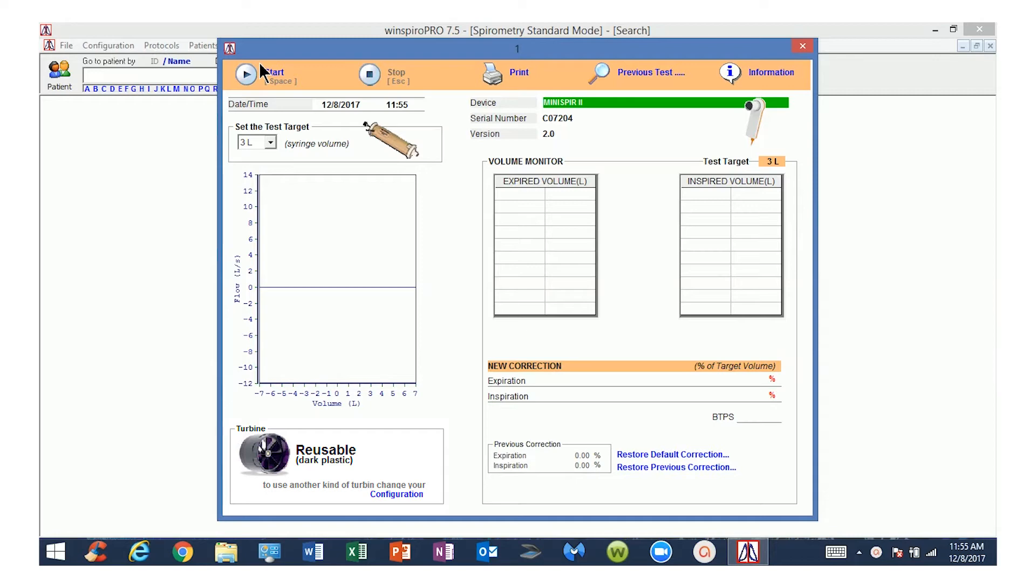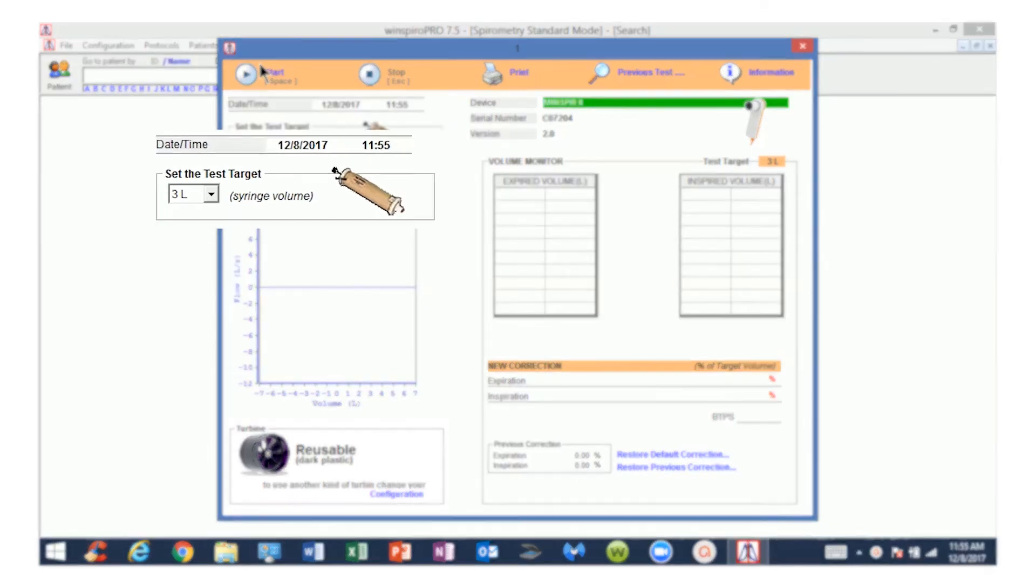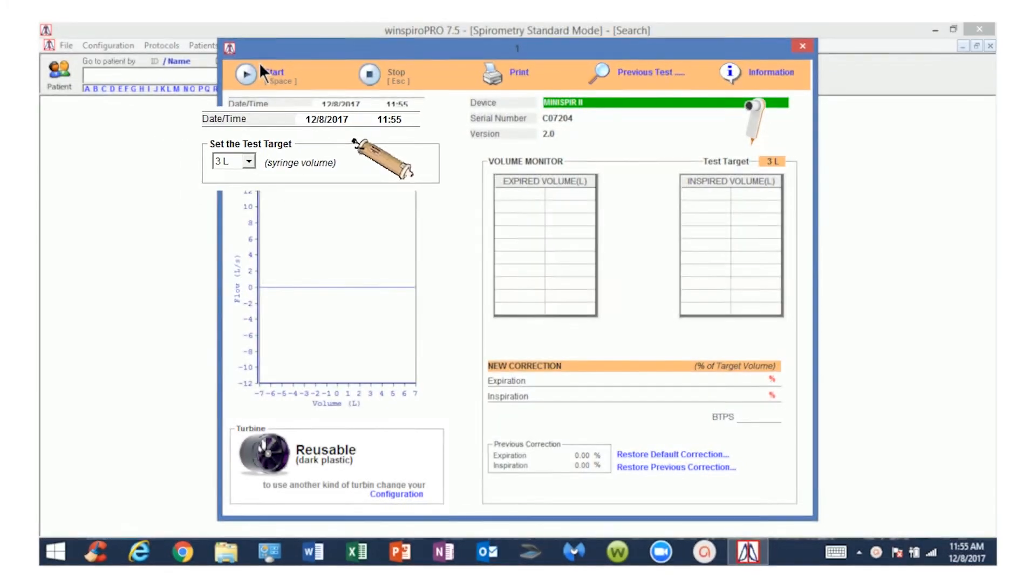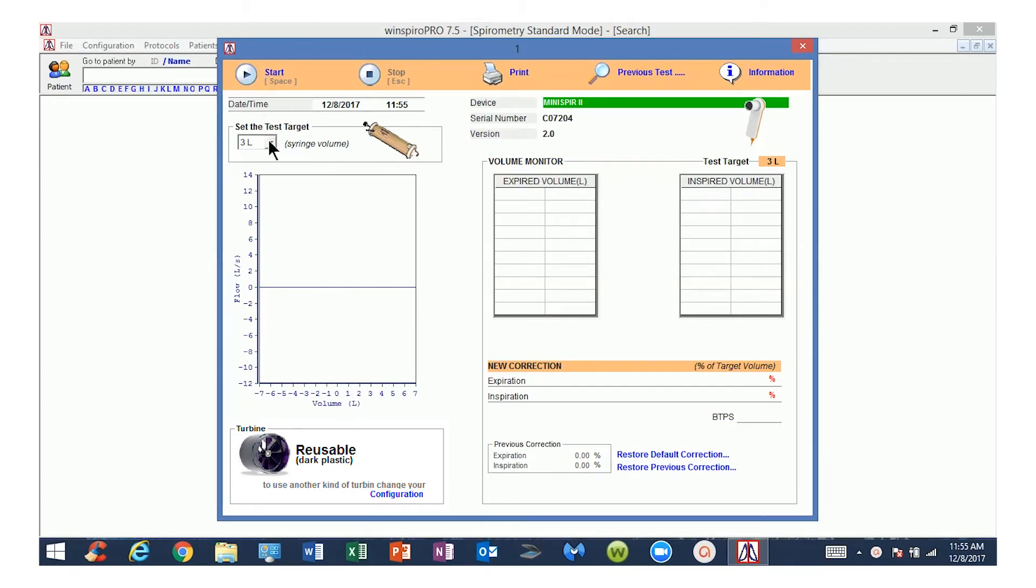Below the row of icons on the calibration test screen, you will see the date and time automatically entered. Below the date and time, you will see the Set the Test Target. From the drop-down arrow, select the volume of the syringe you are using.